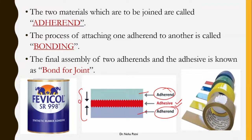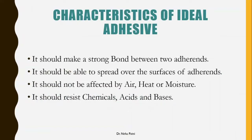Whenever you are joining two papers or two sheets, remember that the sheets you are using are known as adherents. The Fevicol or any kind of adhesive you are using is the compound helping them to join, and together the assembly is known as a bond or joint.